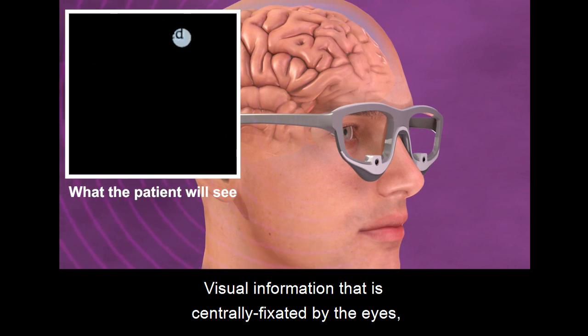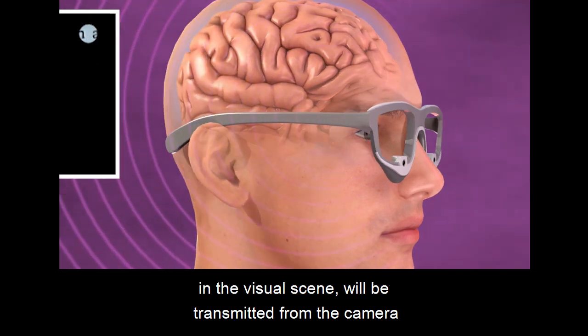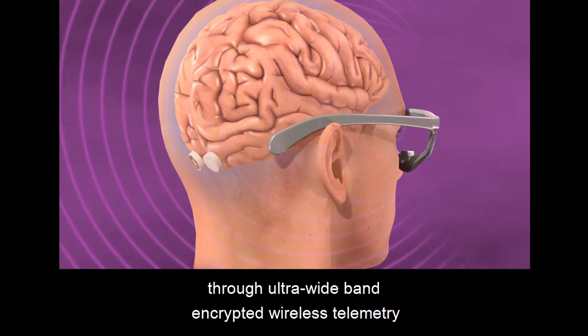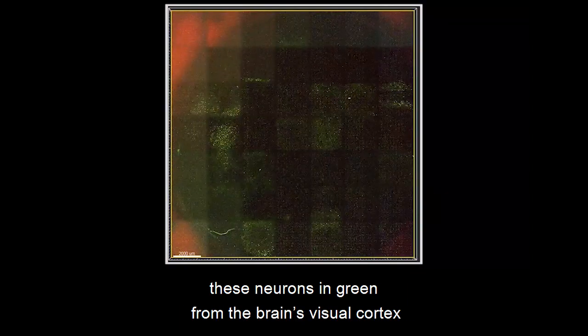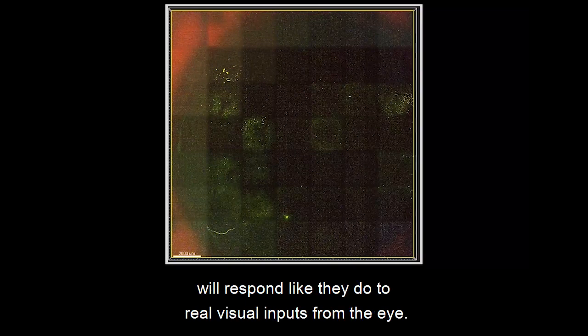Visual information that is centrally fixated by the eyes in the visual scene will be transmitted from the camera through ultra-wide-band encrypted wireless telemetry to the OBServe implant. This suggests that if we beam in light in the correct prosthetic pattern, these neurons in green from the brain's visual cortex will respond like they do to real visual inputs from the eye.